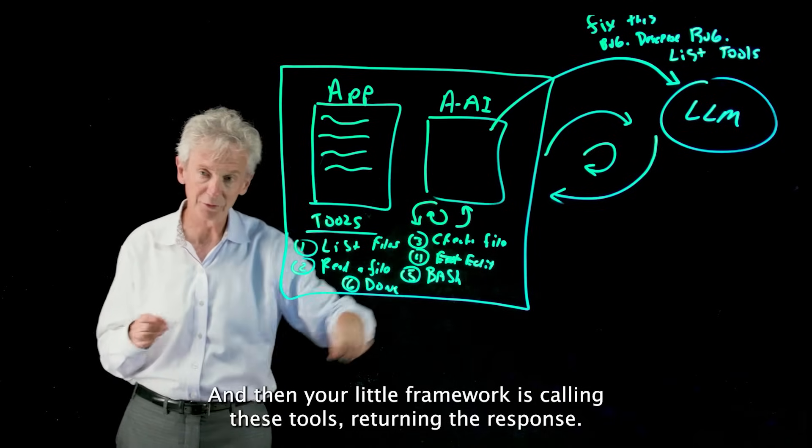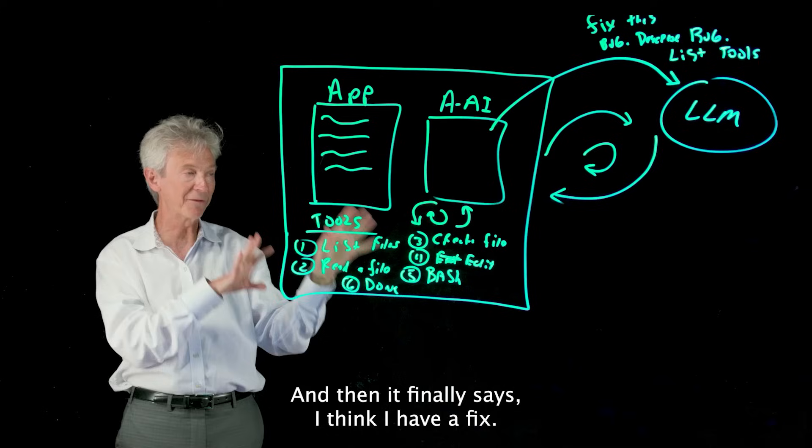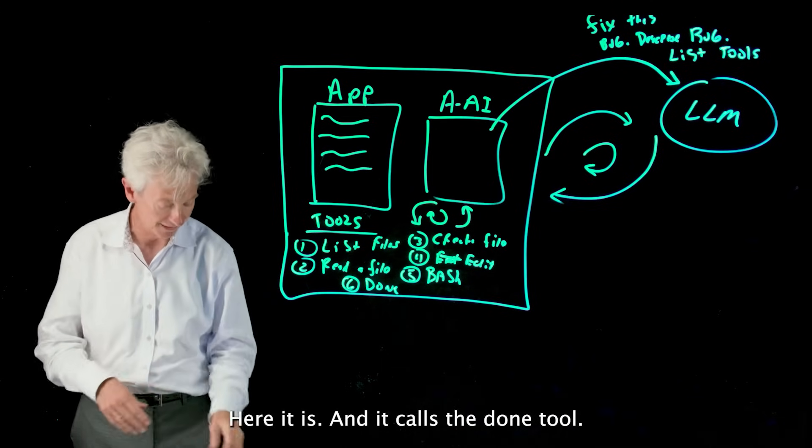It'll keep iterating and it keeps iterating by saying call this next tool and then your little framework is calling these tools, returning the response, and that just happens like a hundred times. And then it finally says I think I have a fix, here it is, and it calls the done tool. And then of course once that's done then you go back to your app and deliver that patch.